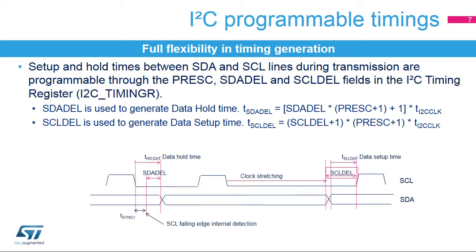The SDA-DEL and SCL-DEL counters are used during transmission to guarantee the minimum data hold and data setup times. The I2C peripheral waits for the programmed data hold time after detecting a falling edge on the clock line before sending the data. After the data is sent, the clock line is stretched low during the programmed data setup time. The total data hold time is greater than the programmed SDA-DEL counter, because the SDA-DEL delay is only added once the SCL falling edge is internally detected. The time TSYNC1 needed for this internal detection depends on the SCL falling edge, the input delay due to the filters, and the delay due to the internal SCL synchronization with the I2C clock. However, the setup time is not impacted by these internal delays.